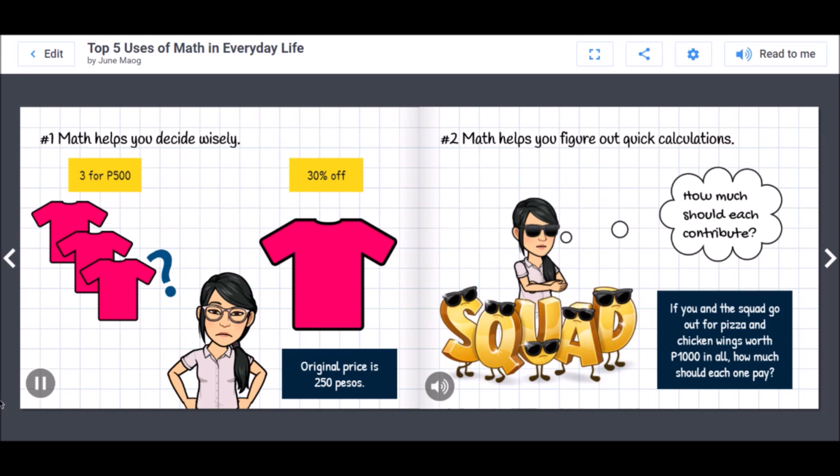Not yet. Ask yourself if you need these three shirts or just one, or if you can buy three shirts with different colors and designs. Then you decide. Number two: Math helps you figure out quick calculations.